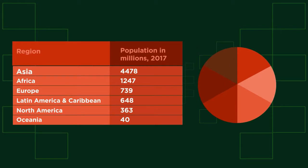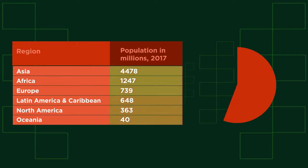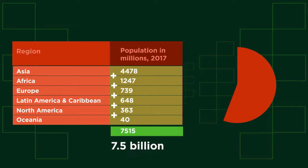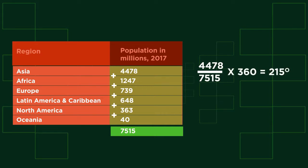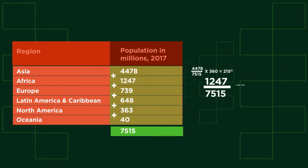Asia has the biggest population, so needs the biggest slice. To work out exactly how big, we need to add up all of the values to work out the total population, which gives us 7515 million people in the world, which is actually 7.5 billion. The size of the Asia slice is 4478 out of 7515 as a proportion of the full 360 degrees. Then Africa, Europe and the rest.